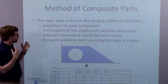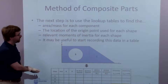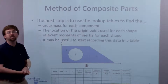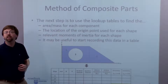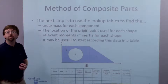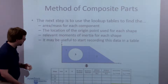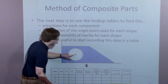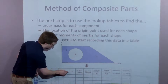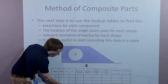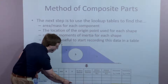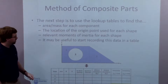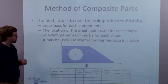It's useful to record this data in a table. I find that's the easiest way to keep track of everything — shape one, shape two, shape three, with centroid area for each part, centroid location X and Y, and the unadjusted moments of inertia, and so on.